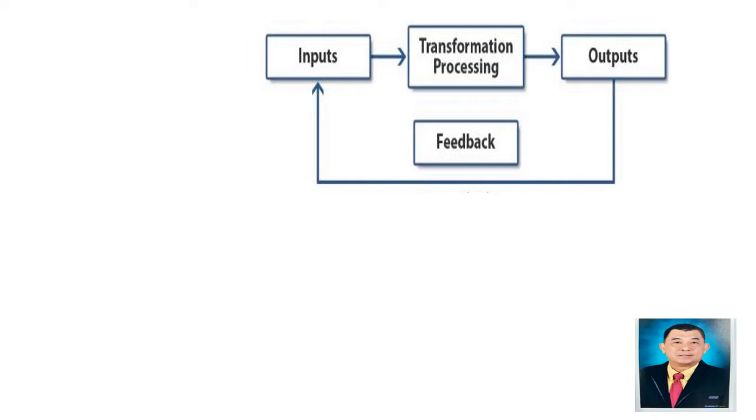To start with, the input-output model is a functional graph that identifies the input, output and process that is required to transform these inputs into outputs.